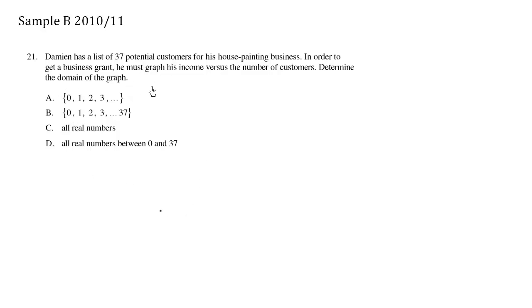Damien has a list of 37 potential customers for his house painting business. In order to get a business grant, he must graph his income versus the number of customers. Determine the domain of the graph.